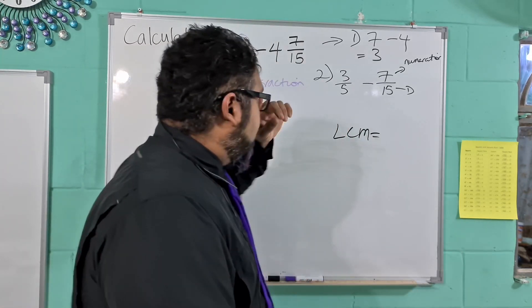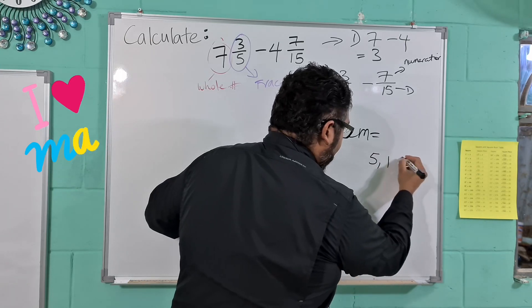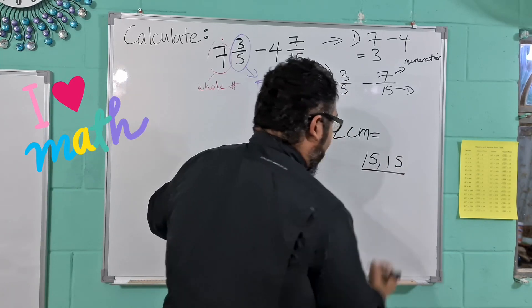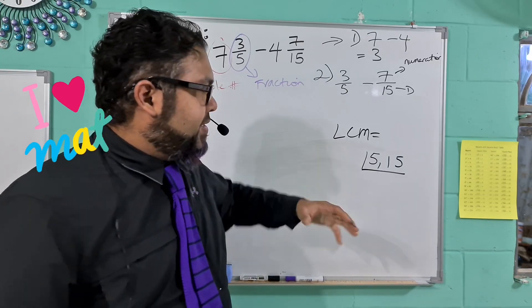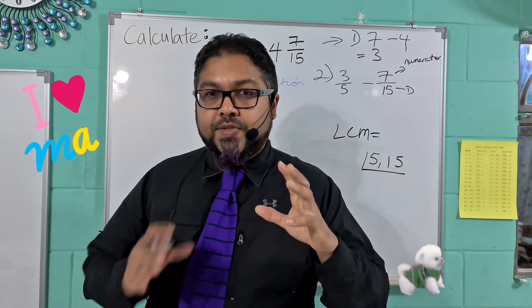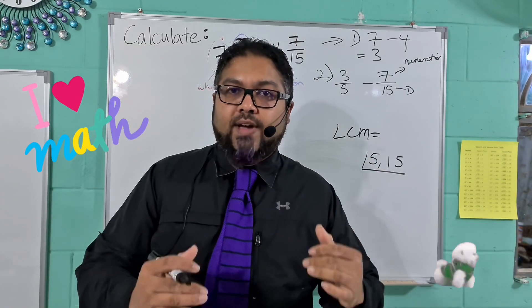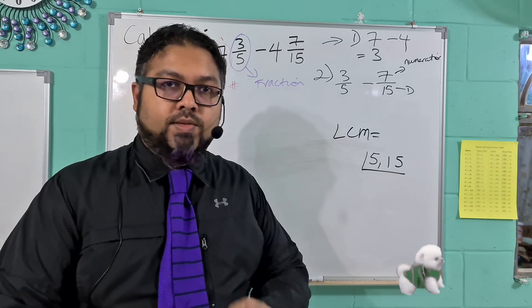In previous videos I explained in super detail how to do this. You guys should know that by now. So we put 5 and we put 15. We draw this little division thingy. And what we do, we test numbers, and we use the smallest numbers that could be divided by these numbers without leaving a remainder. That is super important.